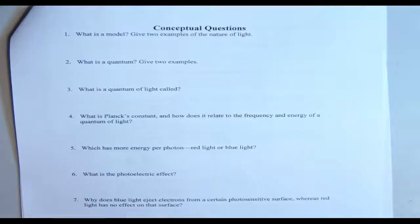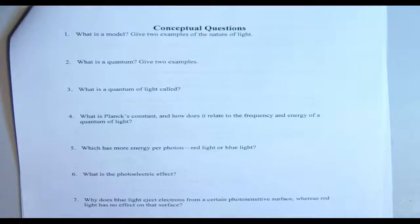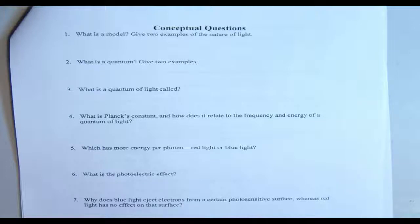Number one: what is a model? A model is something that helps explain processes or understand processes that are hard to visualize or see. As far as examples of the nature of light, you could have a particle model that shows how light particles move, or a wave model that shows how light moves in waves.